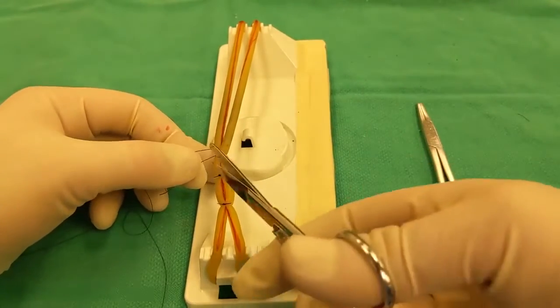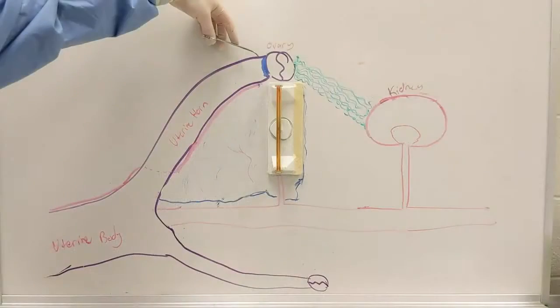So you throw a second knot on top of it, you cut your tag short. All right, so here is a poorly drawn female reproductive tract with the ovary exteriorized.